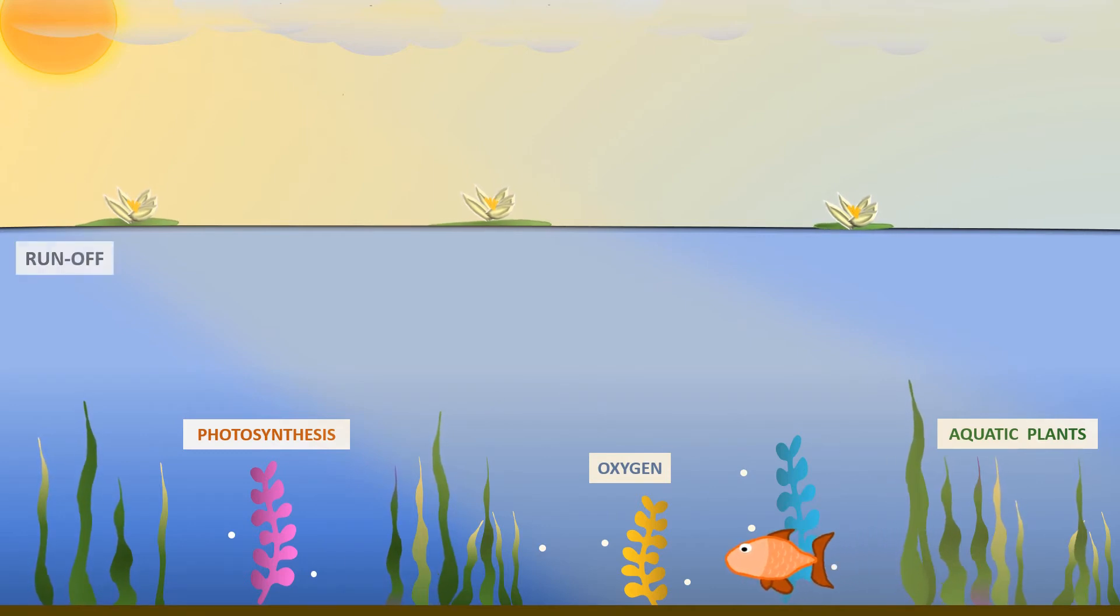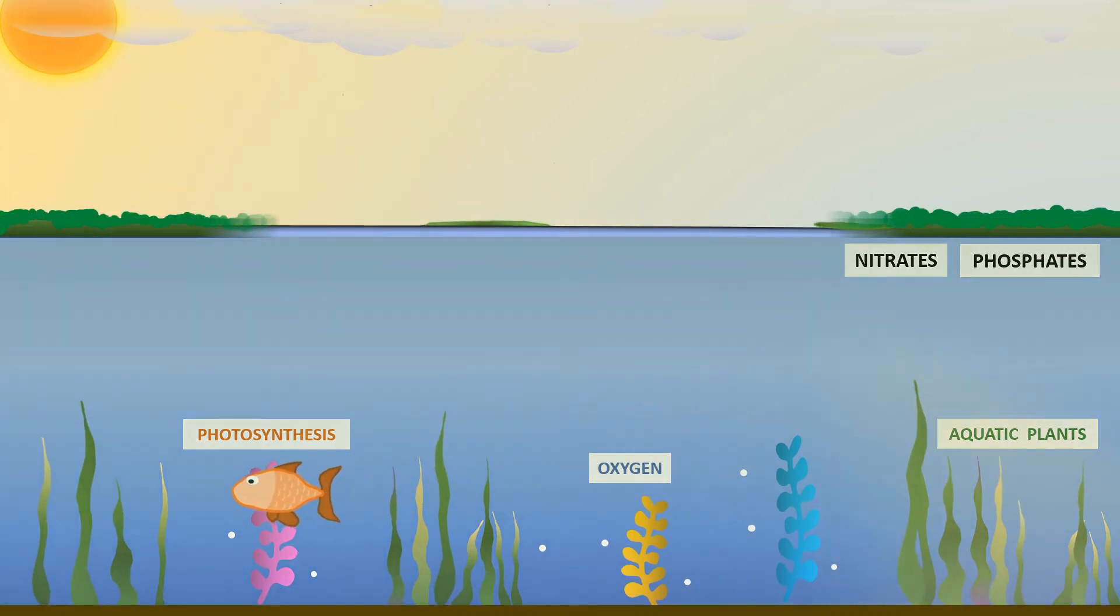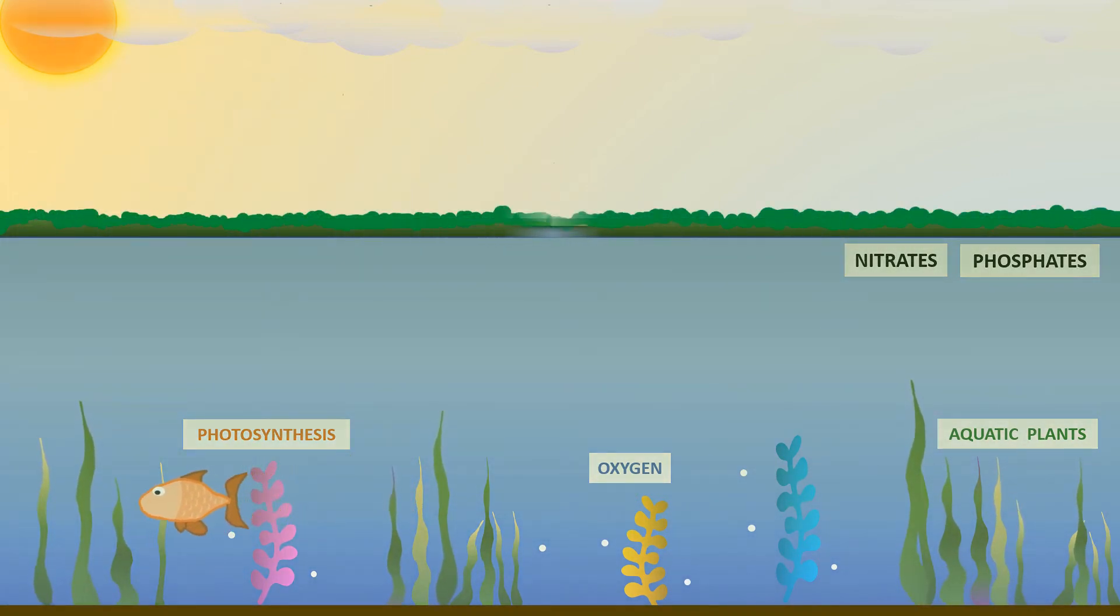However, runoff and leaching of these nutrients that are high in nitrates and phosphates stimulate the rapid growth of algae. These algae grow and cover the surface of water, blocking the sunlight from entering.